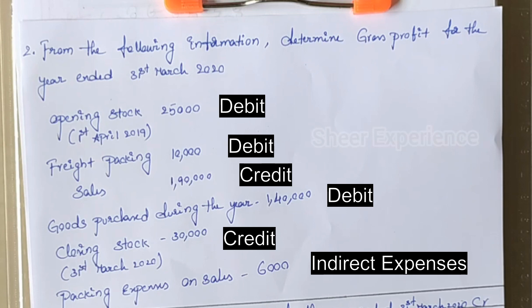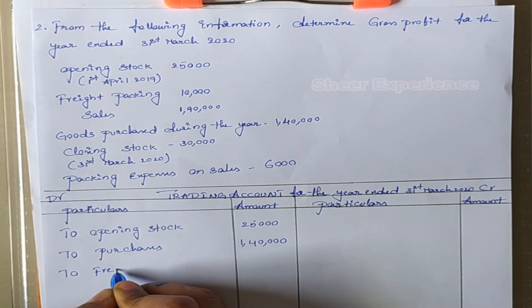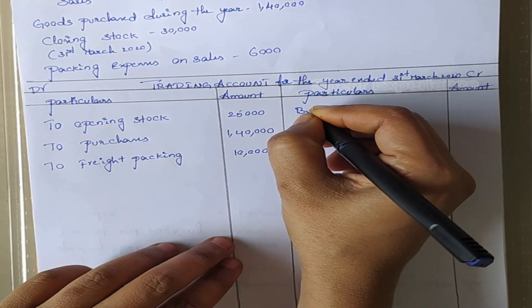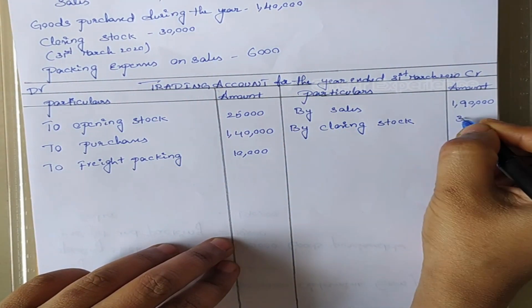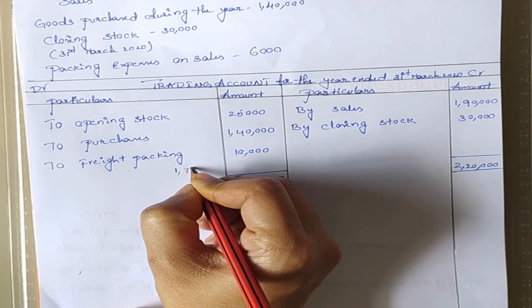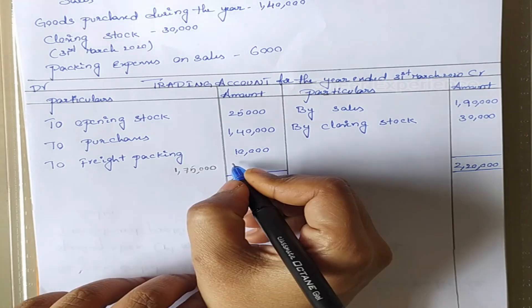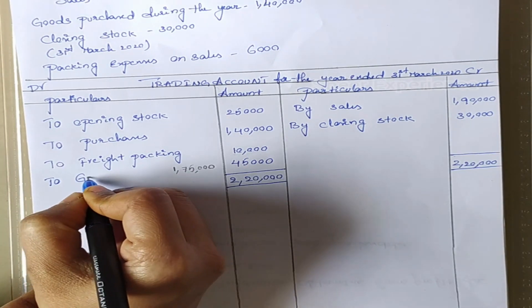As usual, we will mention these accounts on the debit and credit sides and balance the amounts on both sides. The higher amount is on the credit side, that is 2,20,000, and the total on the debit side is 1,75,000. Deducting: 2,20,000 minus 1,75,000 comes to 45,000. This is our gross profit.